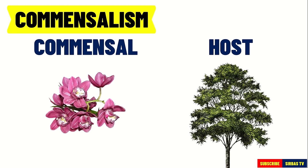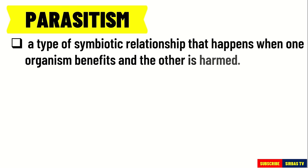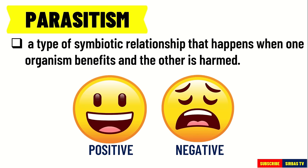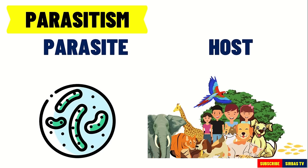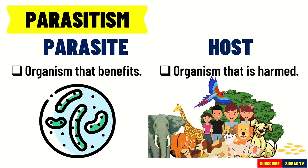The next symbiotic relationship is parasitism. Parasitism happens when one organism benefits and the other is harmed. Their interaction is positive-negative since one species benefits and the other is harmed. The organism that benefits is called a parasite and the organism that is harmed is called a host.